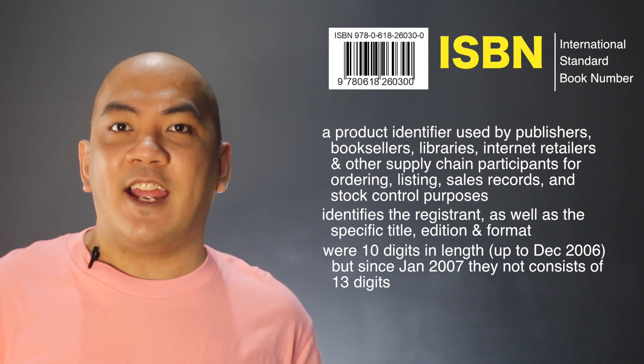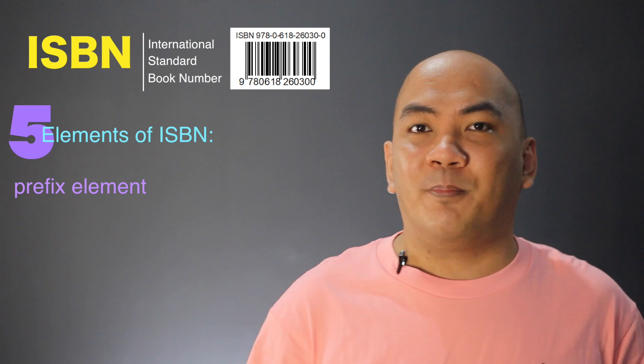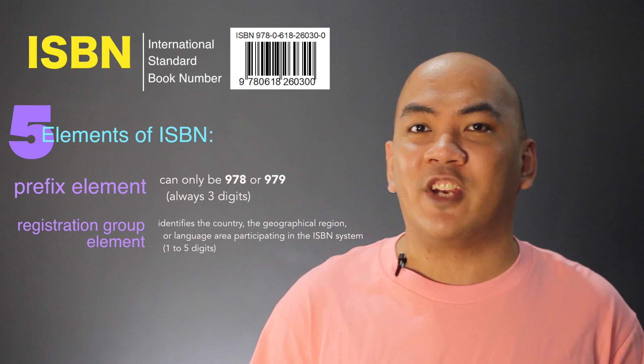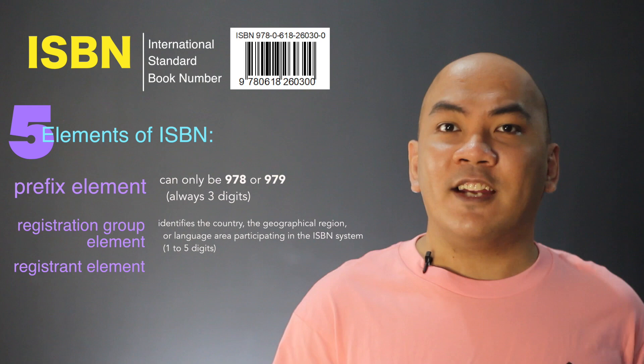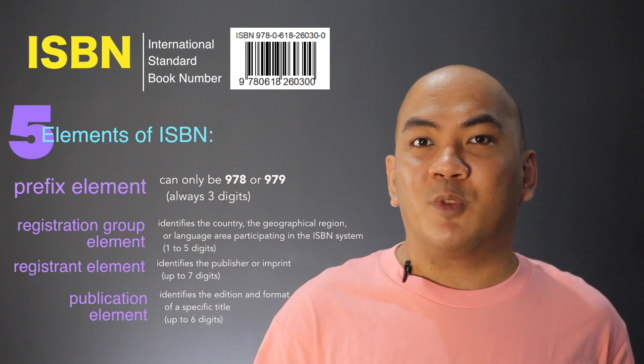ISBNs were 10 digits in length up to December 31, 2006, but since January 1, 2007, they now consist of 13 digits. Each ISBN is composed of five elements: the prefix element, which can only be 978 or 979 and is always three digits; the registration group element, identifying the country, geographical region, or language area; the registrant element identifying the publisher, up to seven digits; the publication element identifying the edition and format, up to six digits; and the check digit, which validates the rest.